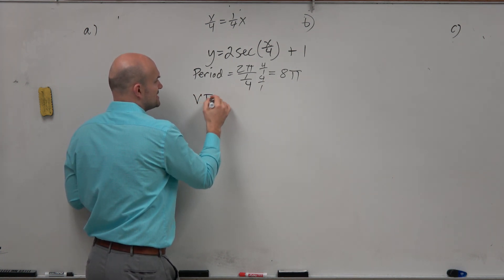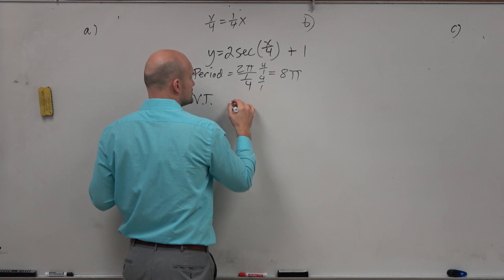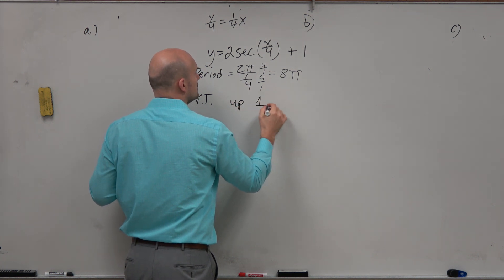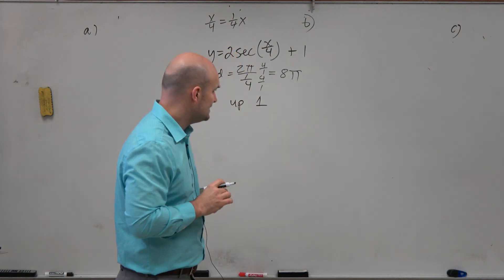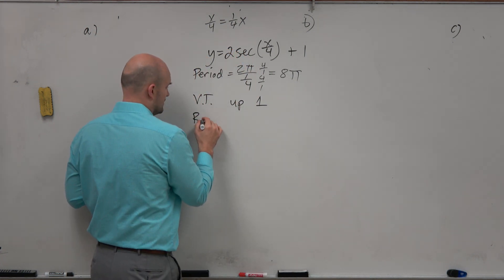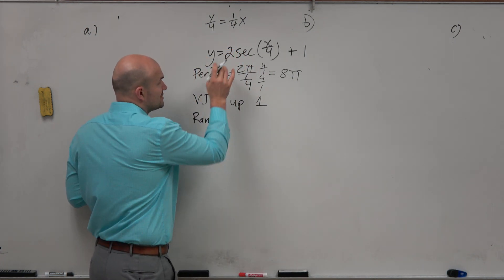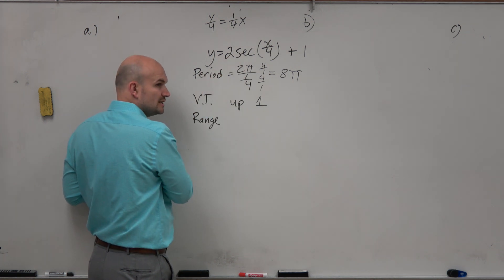We can see, though, we do have a vertical translation, which is up 1. So the graph has gotten shifted up 1. Now, to identify, to understand the range, I think we need to understand what the reciprocal graph looks like.